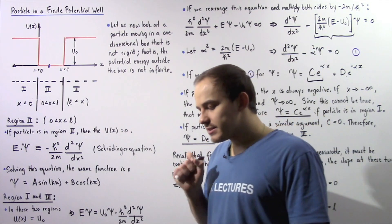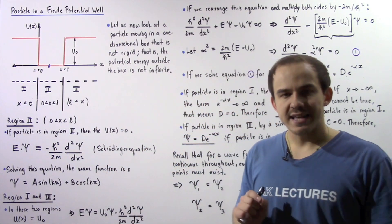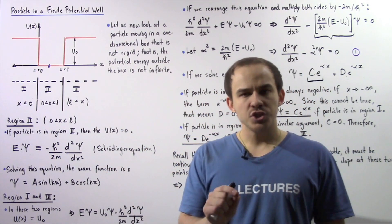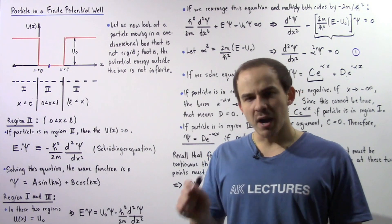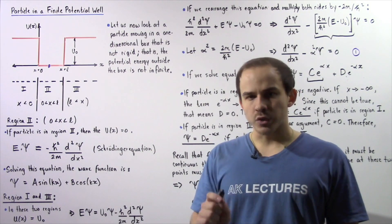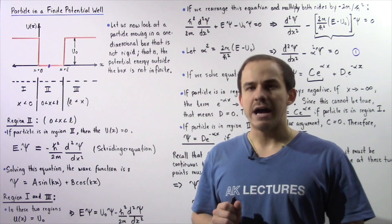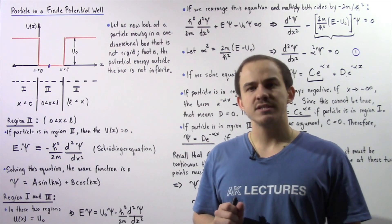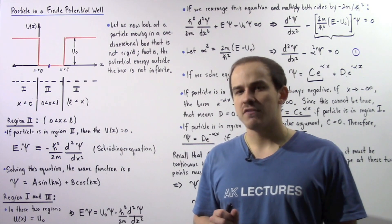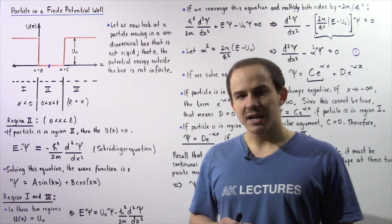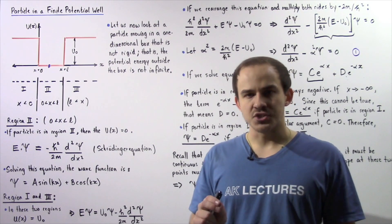Now let's examine the motion of a particle inside a one-dimensional box that is not rigid. That is, the particle is allowed to move outside the box, and the potential energy of the particle outside the box is given by a finite quantity.